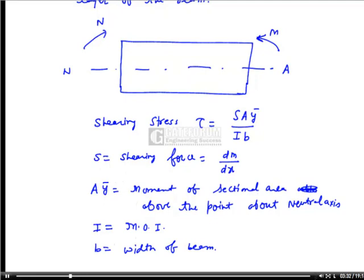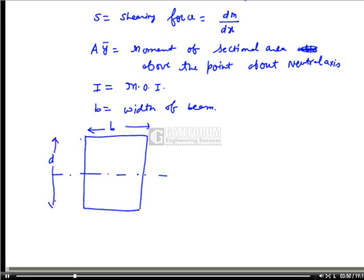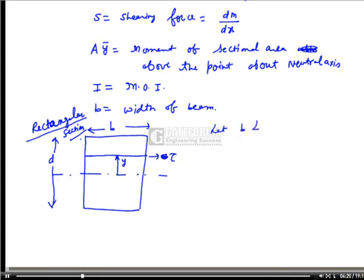To understand this, consider a rectangular section. This is the section with the neutral axis marked. The width of the beam is b and the depth is d. The shear stress τ is evaluated at a distance y from the neutral axis.